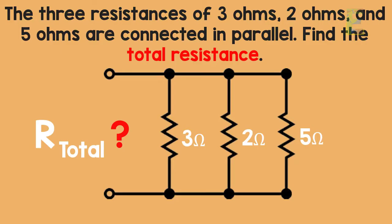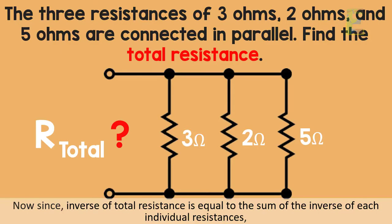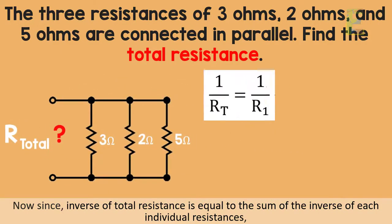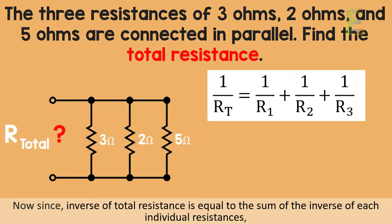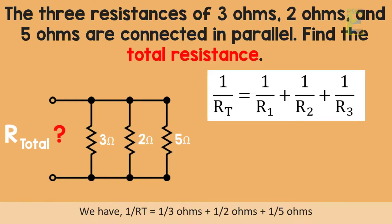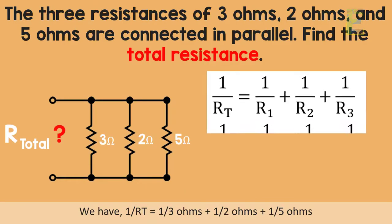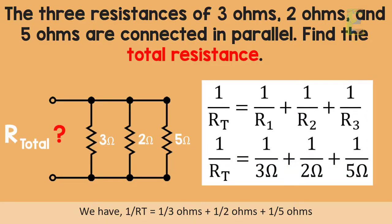Now, since inverse of total resistance is equal to the sum of the inverse of each individual resistances, we have 1 over RT is equal to 1 over 3 ohms plus 1 over 2 ohms plus 1 over 5 ohms.